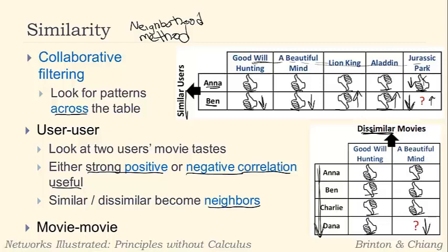We're just cutting the table differently. Here we're looking across the columns to get data on how two different users responded to movies — that's user-to-user similarity. Here we're looking down the rows because we want to look at two different movies and get the most data possible, seeing how users respond to different movies. So we can predict Dana's rating for this movie. If Dana didn't like Good Will Hunting, we would think she was going to like A Beautiful Mind. It works either way. We'll focus on the movie-to-movie similarity here.